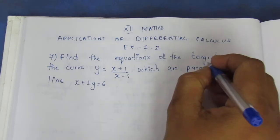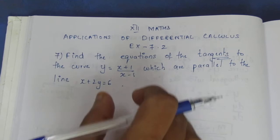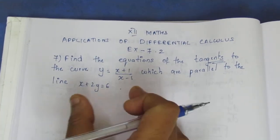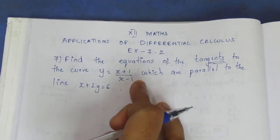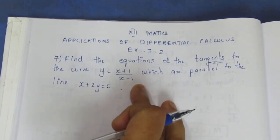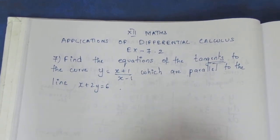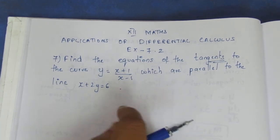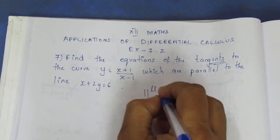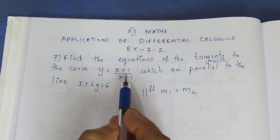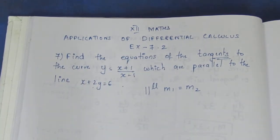So for the equation of the tangents, we know that if a tangent is parallel to a line, then the slopes are equal — that is, M1 is equal to M2. We know the slope of the curve and the slope of the given line must be equal for this sum.